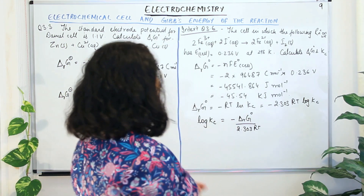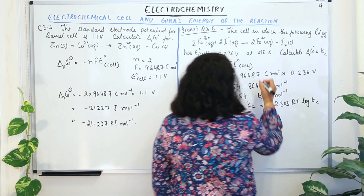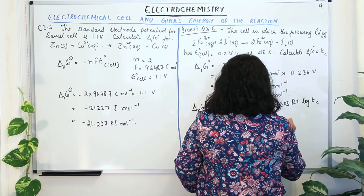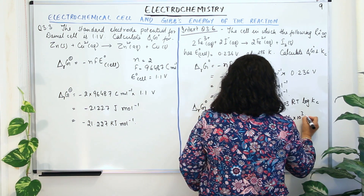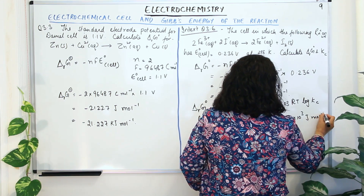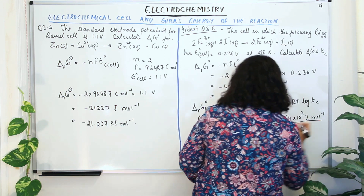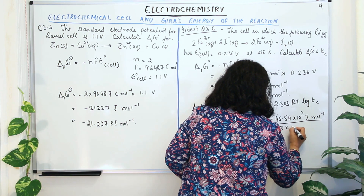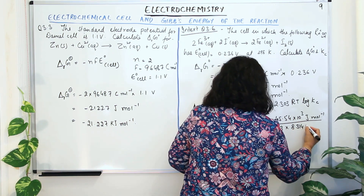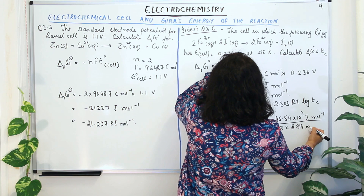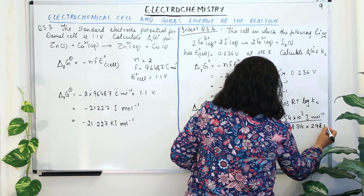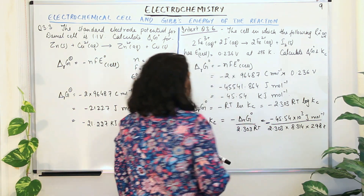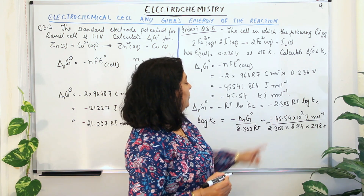Substituting the values: ΔrG° = −45.54 × 10³ joules per mole, R = 8.314, and T = 298 Kelvin. Note that the minus sign outside and the negative value of ΔrG° together make the result positive.